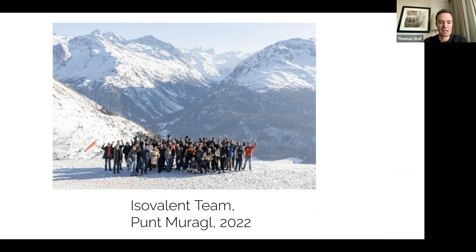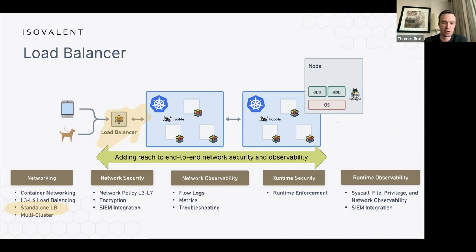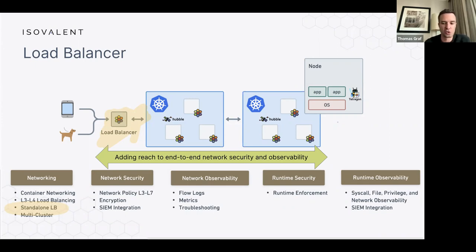We continued adding pieces to Cilium. The next piece was the standalone load balancer — essentially running Cilium as a load balancer in front of a Kubernetes cluster. So far we'd been able to do load balancing inside the cluster or across clusters, but now all of a sudden you could run a Cilium-based load balancer in front of the cluster and balance traffic across multiple clusters or do anycast routing. Whatever traffic comes in — from a smartphone, IoT device, laptop — you could use Cilium to do the load balancing and gain observability and network policy control.